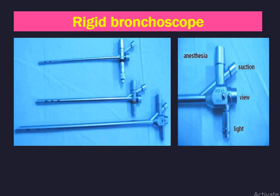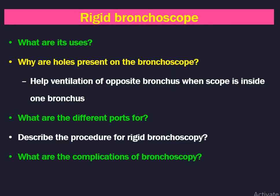Next instrument is the rigid bronchoscope. You can differentiate between a bronchoscope and esophagoscope in different ways which may be asked in the exam. The direct bronchoscope has holes in its proximal end. There are openings in the distal part for anesthesia, suction, viewing, and the light source — this is called prismatic light. The uses are both therapeutic and diagnostic indications for rigid bronchoscopy. The holes on the bronchoscope help ventilate the opposite bronchus when the scope is inside one bronchus — this feature is not present in the esophagoscope.